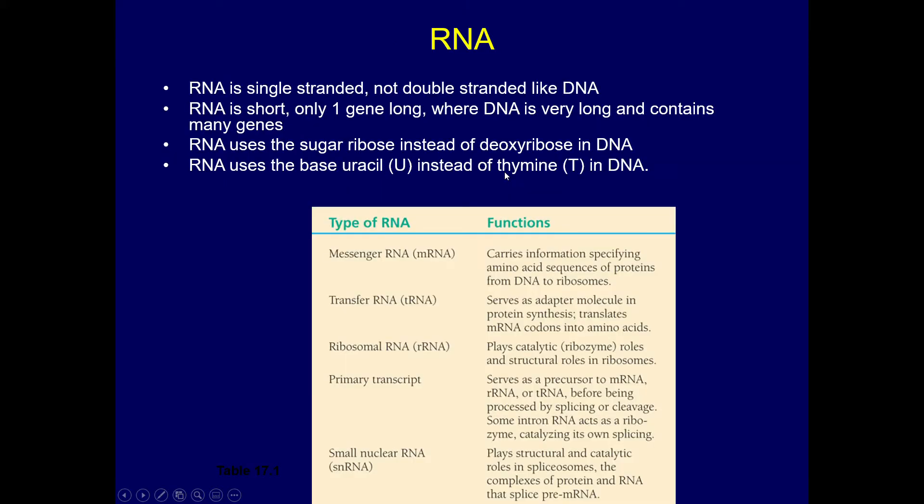RNA, unlike DNA, is single-stranded. It's always short, representing only about one gene, whereas DNA contains all the genes. RNA is also made using ribose instead of deoxyribose, and as mentioned, it uses uracil instead of thymine.